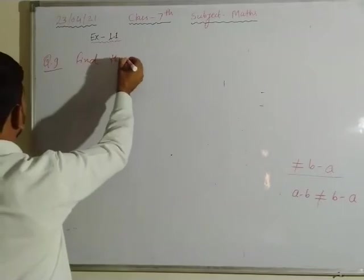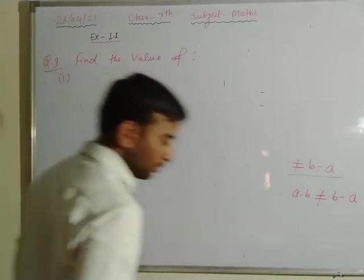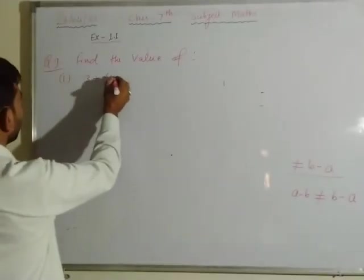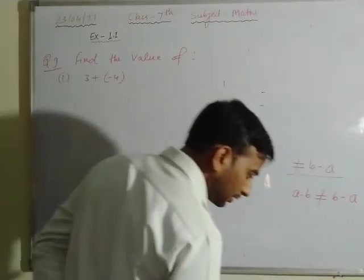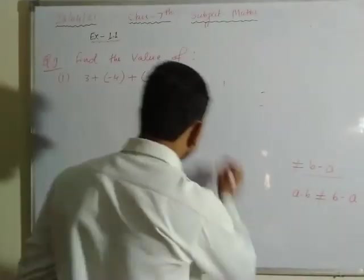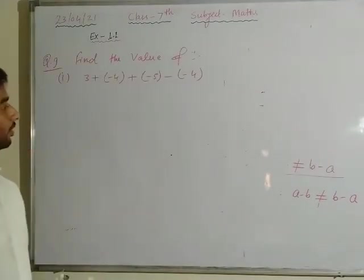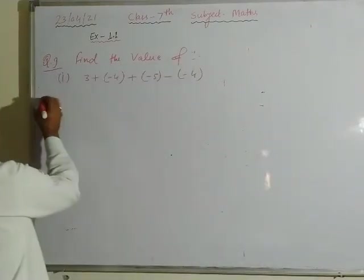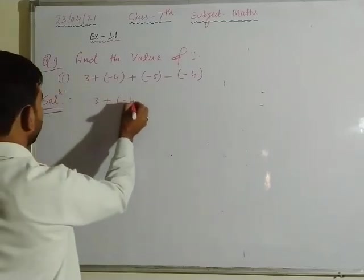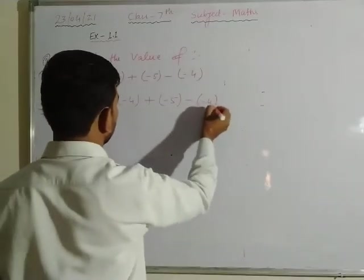Question number 9: find the value. First part — find the value of 3 plus minus 4, plus minus 5, minus minus 4. We need to find the value of this expression.